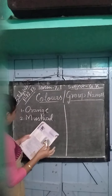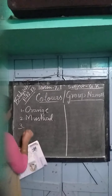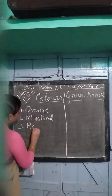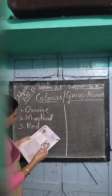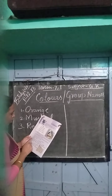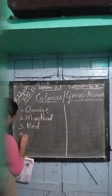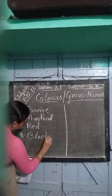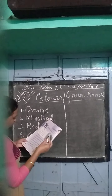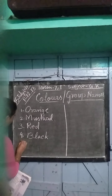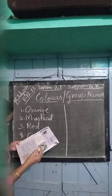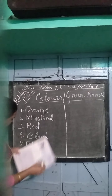Mustard. Number 3 — red. Fourth number — black. Fifth number — blue. Six number — green.